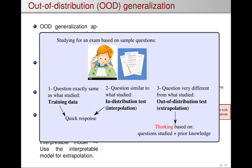Let's say you're studying for an exam in a data-driven fashion — instead of reading lecture notes, you're studying only through sample questions from prior exams. If a question comes that's exactly the same as what you studied, you can quickly write the response if you memorized well, and that's exactly what a neural network does. If a question comes that's similar but not exactly the same — an in-distribution test — and if you learned something meaningful, you should be able to write the response quickly. This is exactly the same as a neural network: as long as it's learning something meaningful and not just copying the labels, it should be able to interpolate accurately.